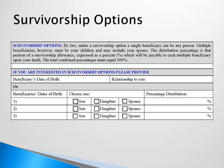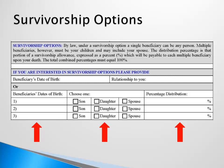If you would like the estimate to include a survivorship option, list a single beneficiary's date of birth and relationship to you. If you would like to see a survivorship option with multiple beneficiaries, which is limited to your children and may include your spouse, list each person's date of birth, check the appropriate box for their relationship to you, and designate a percentage, making sure the combined percentages equal 100%.